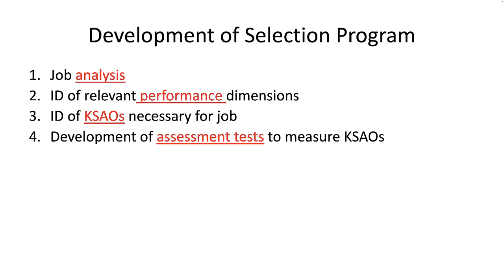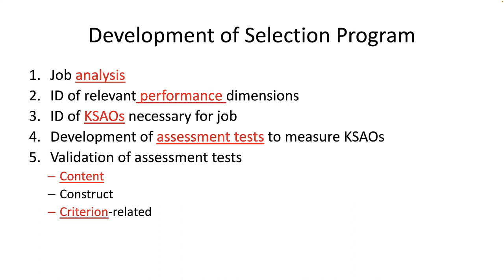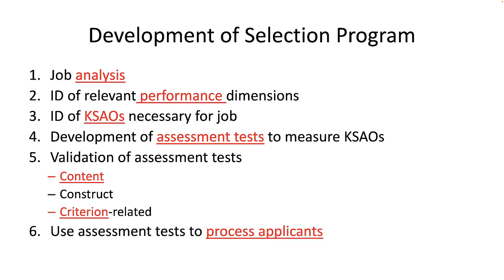We might check references to see if applicants actually have cash handling experience, give them a math test, or give them a personality test to measure their friendliness. Next, we have to gather validity evidence — evidence that should be content-related, construct-related, and criterion-related. We'll spend a whole chapter on validity. Lastly, we administer these tests. Checking a reference is a test; we score it and it becomes part of the selection decision. Every interview, questionnaire, application, or resume — everything is a test. In the selection world, anything used to make a selection decision is a test, and every bit of evidence collected on an applicant is scored.